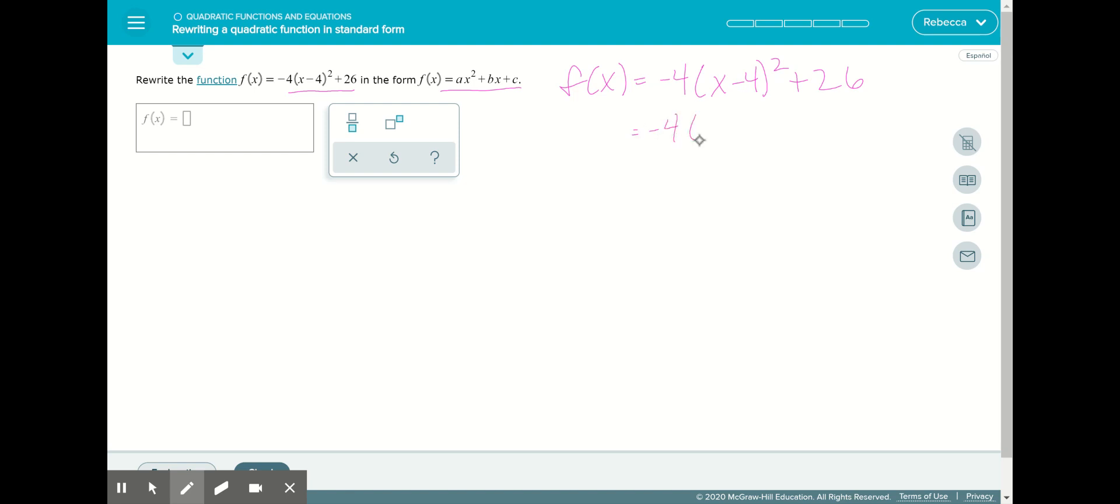So we have x minus 4 times x minus 4. So first we'll distribute this negative 4. So negative 4x plus 16 is first parentheses.